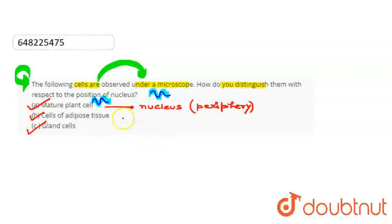Second is the cells of the adipose tissue. So in adipose tissue, the center area is occupied by the fat globules.